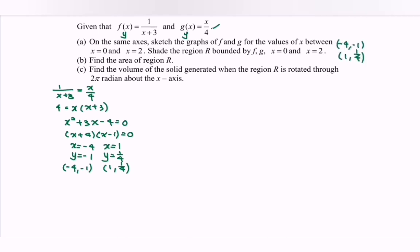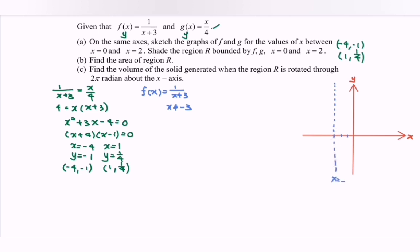Next, sketch the graph for f(x) = 1/(x+3). This is a reciprocal graph. Notice that x cannot equal -3, so we have a vertical asymptote at x = -3. The x-axis (y = 0) is the horizontal asymptote. Substituting x = 0 gives y = 1/3, so we have the coordinate (0, 1/3).